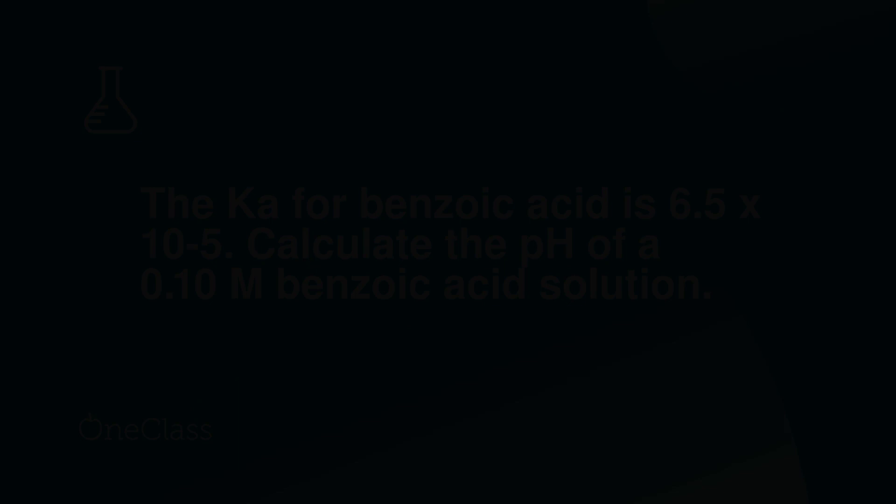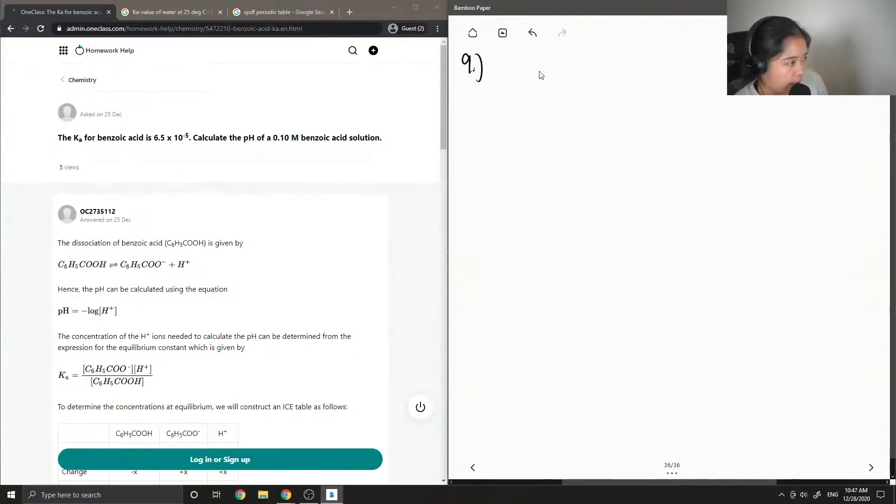Okay, so on to question nine. Ka for benzoic acid is 6.5 times 10 to the negative 5. Calculate the pH of a 0.1 molar benzoic acid solution.